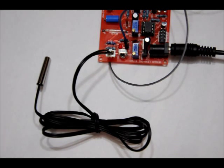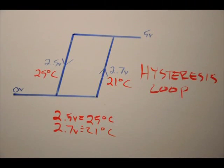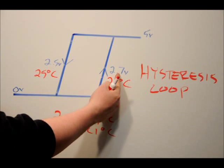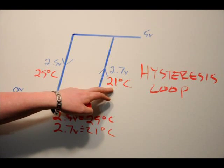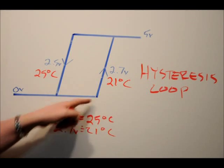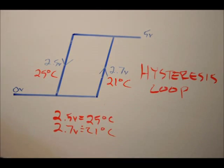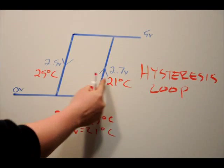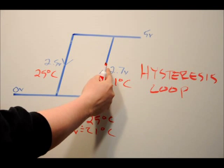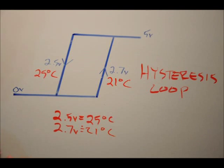There's an important concept used in thermostats and many electronics applications called hysteresis. Let me explain why it's necessary. Say we calibrate our circuit so the output goes from 0 to 5 volts when the THRM line reaches past 2.7 volts — roughly 21 degrees — and that turns on a relay and a heater. But as soon as the heater turns off the room gets cold again, so the relay turns on again, then off, then on, then off. It becomes really inefficient and annoying.